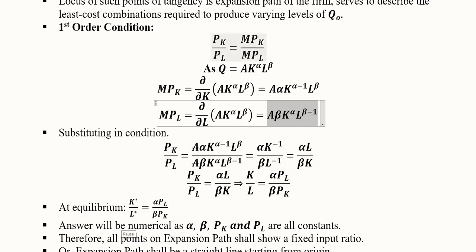Substituting in condition, now the values of MPK and MPL are found and we can put them here. After substituting and cancelling out a few things, we have got the answer which is equal to this. So we can say that it can be written like this. And finally, if I want to get the value of K over L, that is the capital to labor ratio, it will be equal to this.